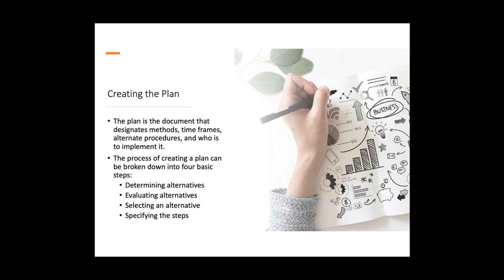Once you have selected the alternative, it is a question of specifying the steps: what will happen first, what will happen next, and what steps may be on the critical path. The critical path means that if step three is absolutely crucial — because step four cannot happen until step three is finished — those are the specific particulars you need to consider when establishing the steps in your plan.